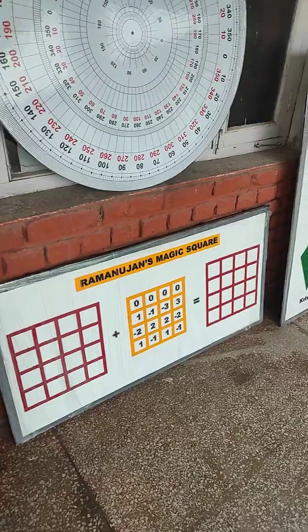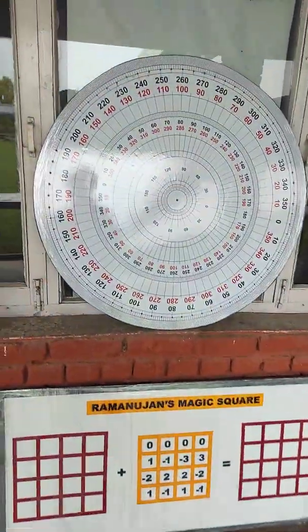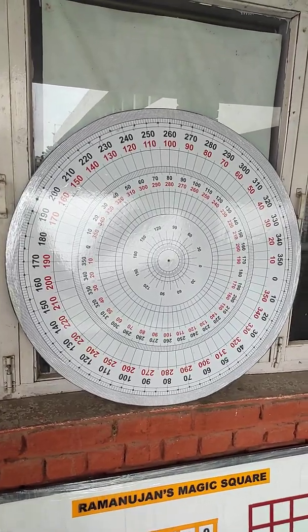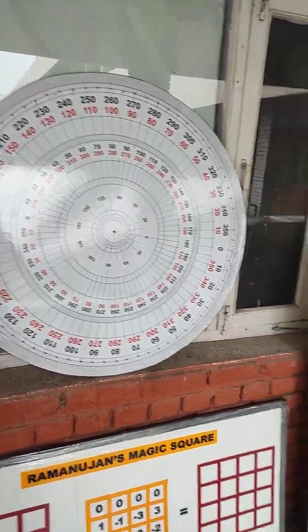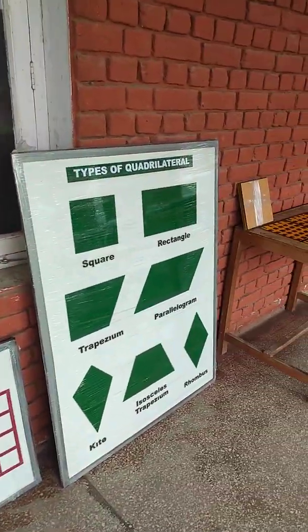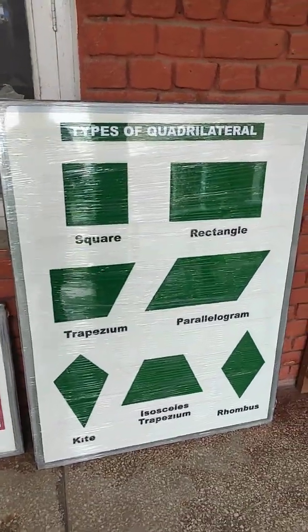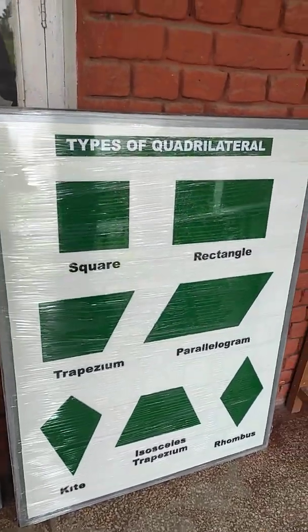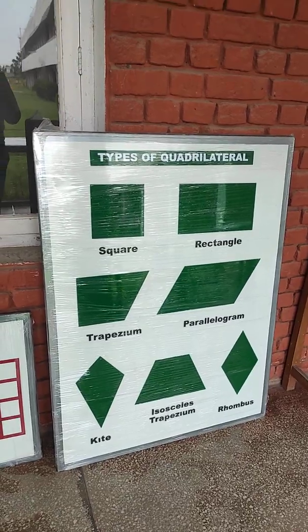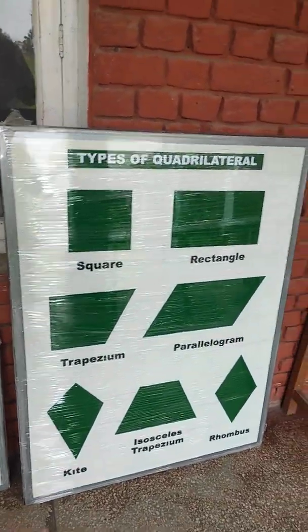Ramanujan's magic square — this is an activity for the practice of addition. And the circular D you can see, it is very big in size, 3 by 3 feet. Now the types of quadrilateral. Most of the time students are confused about how to make comparisons between each and every quadrilateral, so in this one model they can do the comparison.